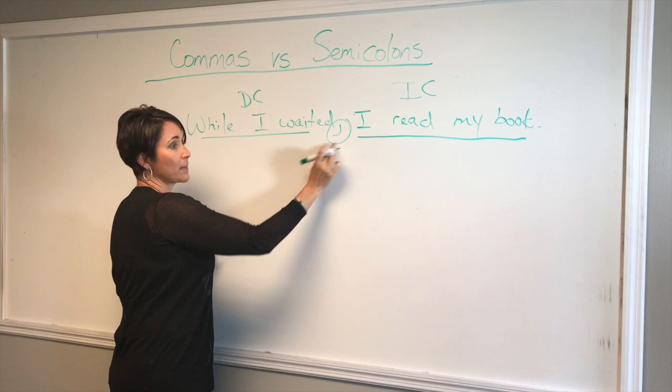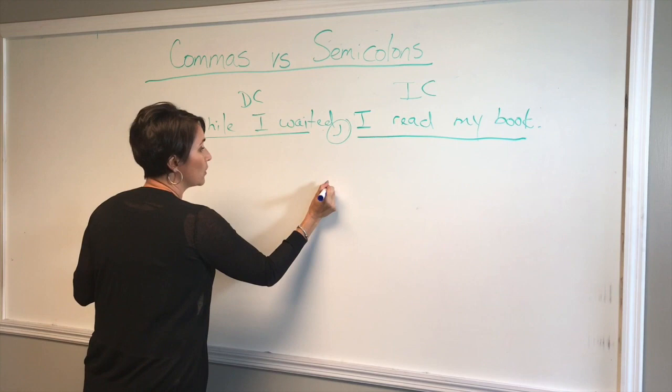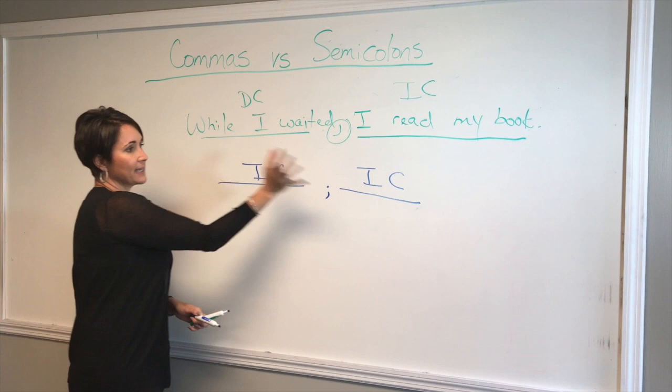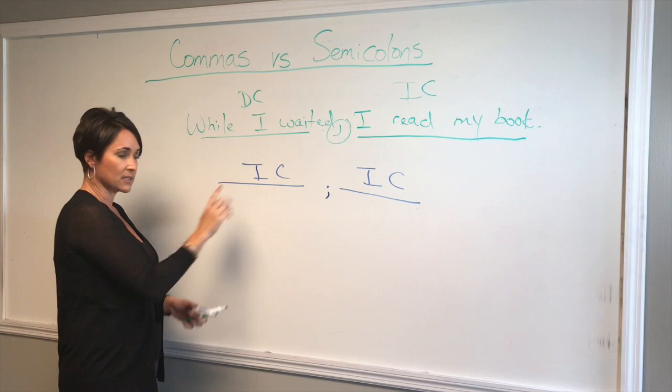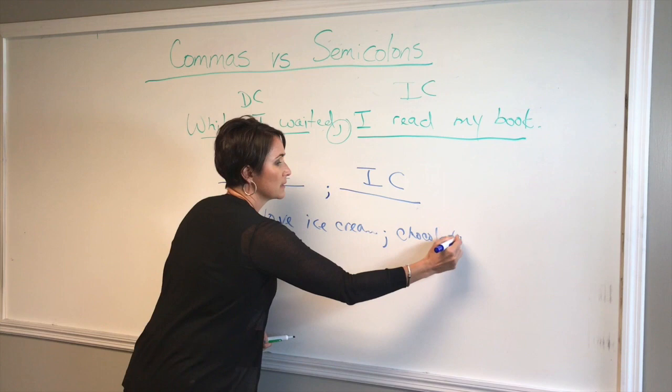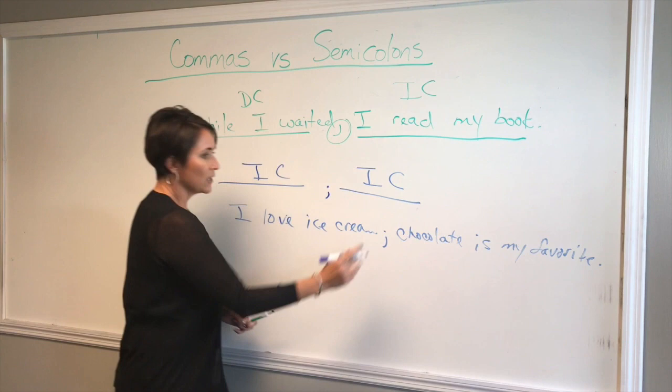Now, semicolons are different. Semicolons separate two independent clauses. So if you're looking at something separated by a semicolon, you should be able to cover up one side and see that it reads as a sentence, and cover up the other side and see that it also reads as a sentence. For example: 'I love ice cream; Chocolate is my favorite.' Chocolate is my favorite is a sentence, and I love ice cream is a sentence. In this case, the semicolon works.